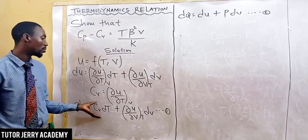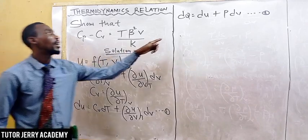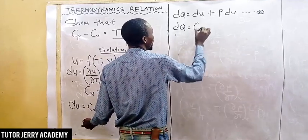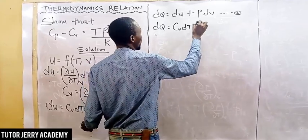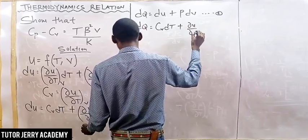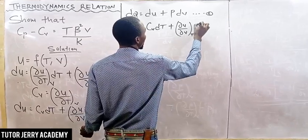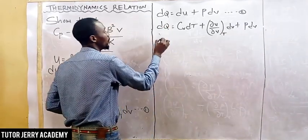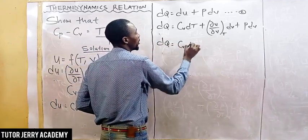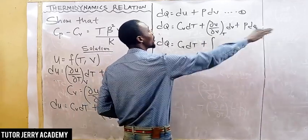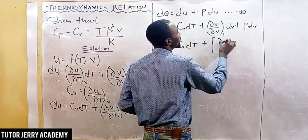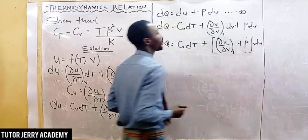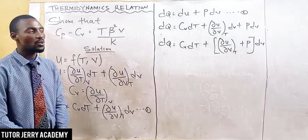We are going to substitute du into the First Law of Thermodynamics, so dQ equals Cv dT plus the partial derivative of u with respect to V, keeping T constant, dV, plus P dV. Factoring out dV, we get dQ equals Cv dT plus the partial derivative of u with respect to V, keeping T constant, plus P, all times dV.